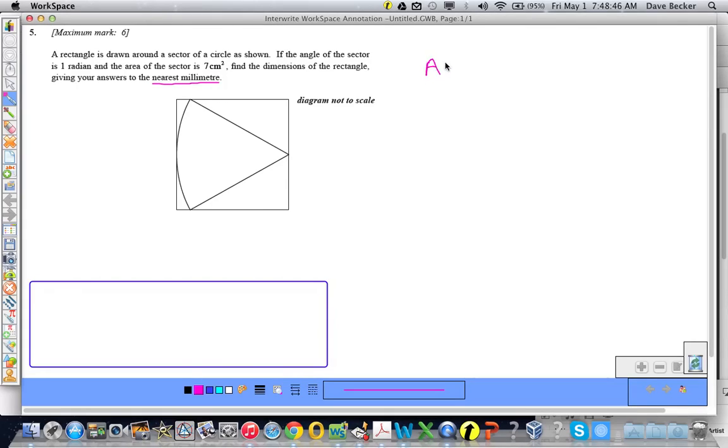We know that the area of a sector is given by A = 1/2θr² where θ is in radians. Booyah! They gave it to us in radians. Therefore, we know that 7 = 1/2 × 1 × r². So r² equals 14, and r = √14. So we know that this radius equals √14.